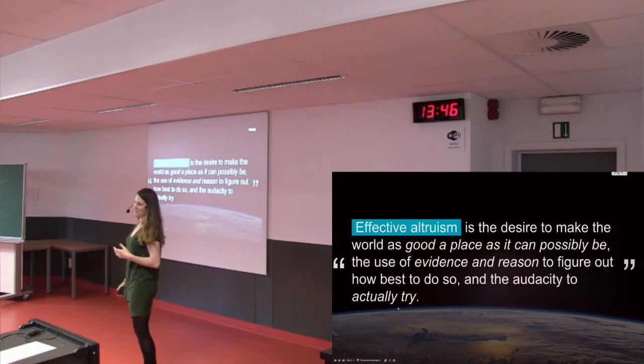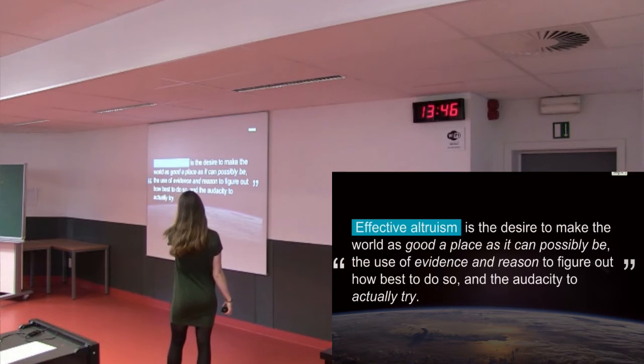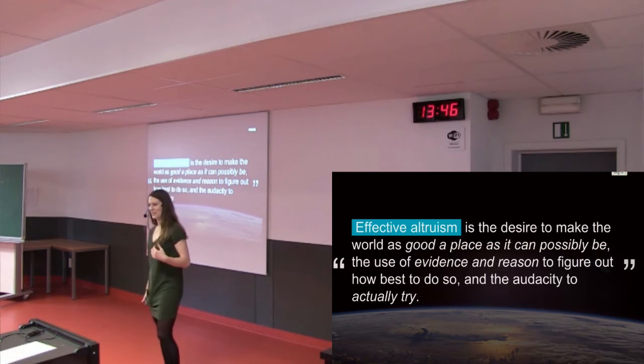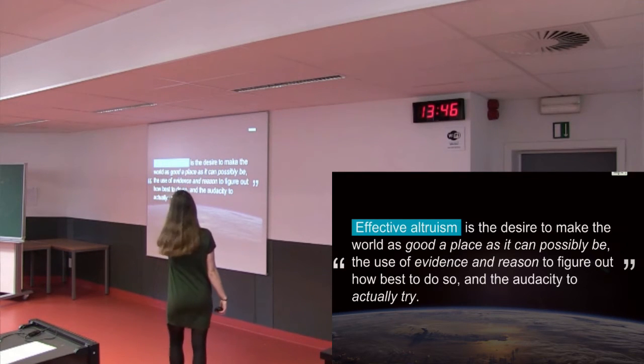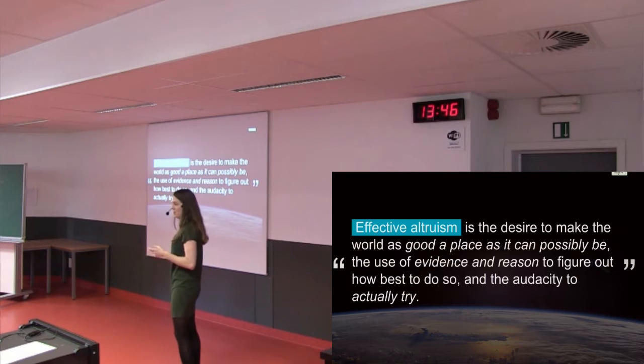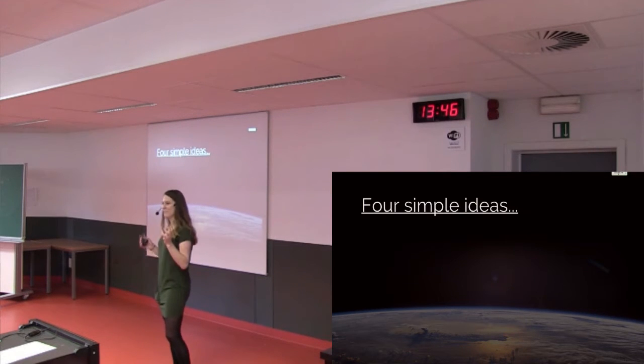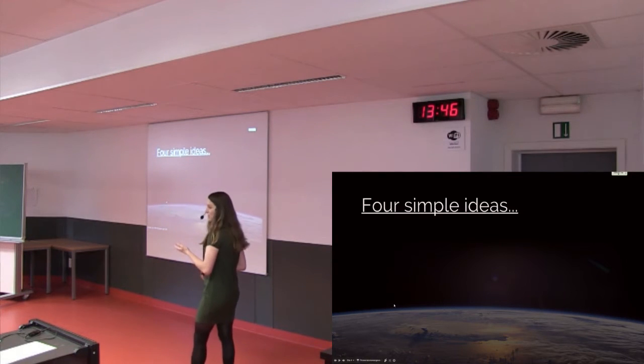This is just going to be a bit of an introduction. As I said, effective altruism is this nice quote that some of my colleagues came up with a couple of years ago, and they put it in these lofty big terms that effective altruism is the desire to make the world as good a place as it can possibly be, the use of evidence and reason to figure out how best to do so, and the audacity to actually try. I'm not one for such lofty sentiments. So instead, I like to think of effective altruism as these four really simple ideas that I think everyone in this room can agree to.